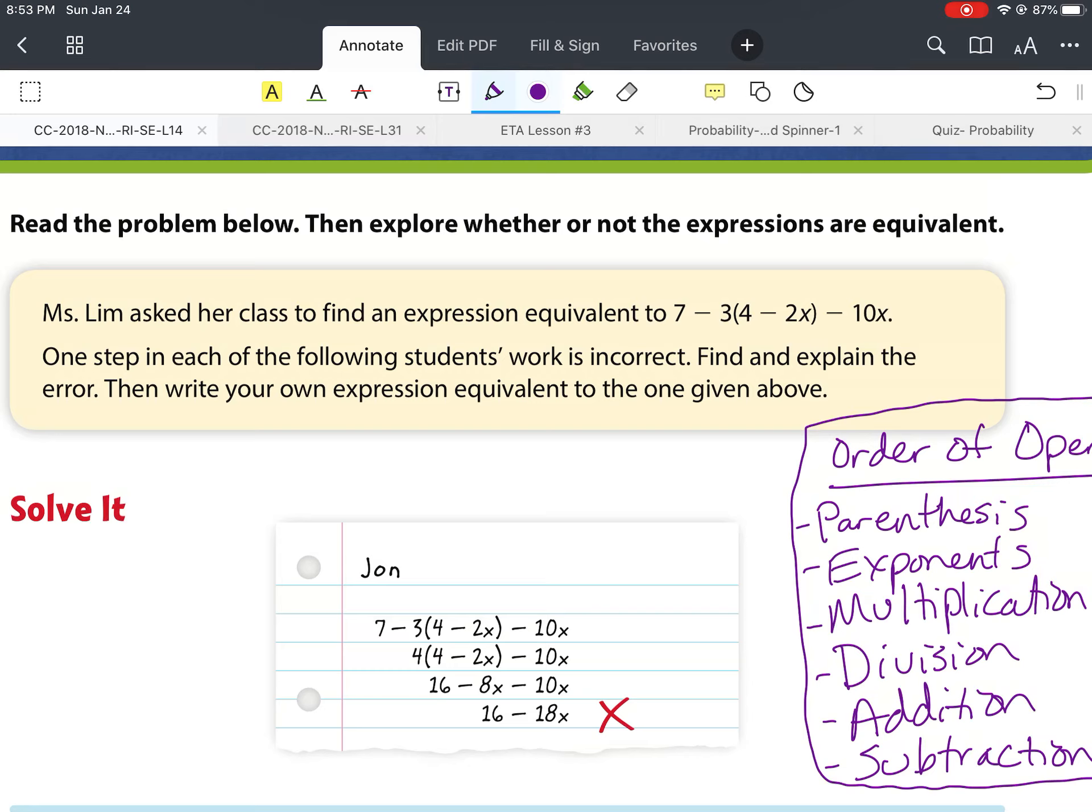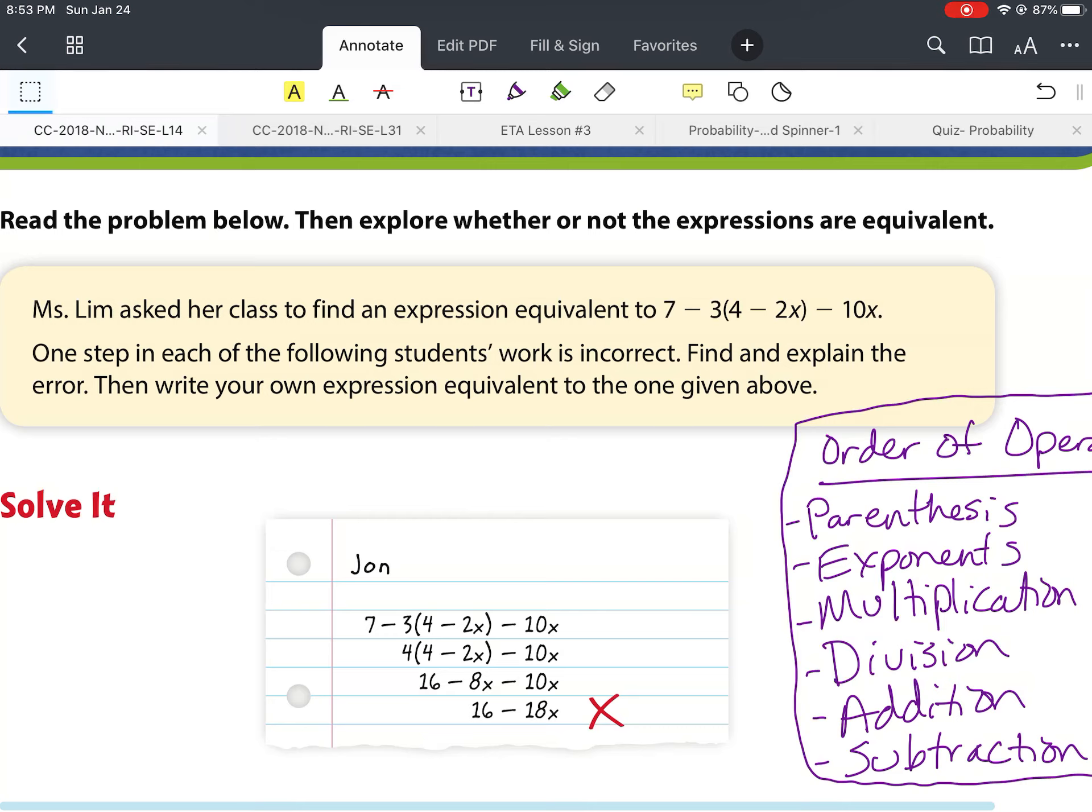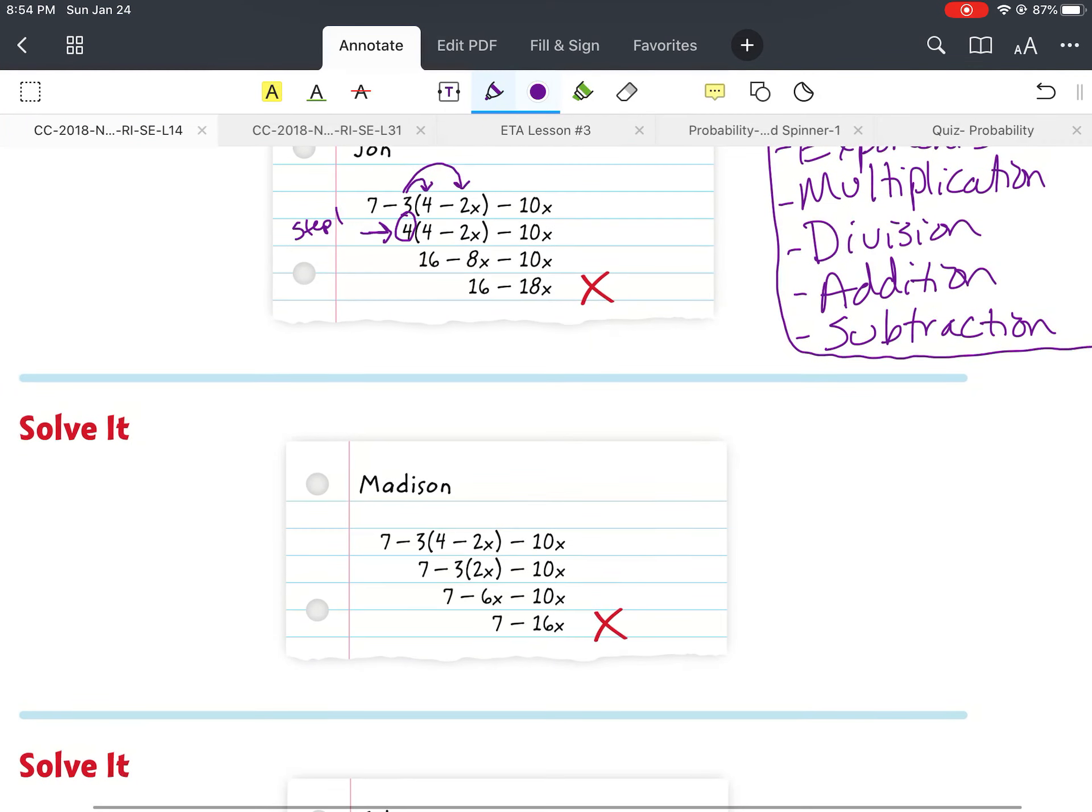All right, so if we look at John, it says the original equation was 7 minus 3 times 4 minus 2x minus 10x. Well, when we go down to step 2, it says 4 times 4 minus 2x minus 10. So looking from step 1 to step 2, it appears that John did 7 minus 3 to get the 4. And actually, that would be the place where he went wrong in step 1 with the 4. Because you would be distributing this 3 to these terms after you've done that. Then you worry about the 7. So that's where John went wrong and got the incorrect answer.